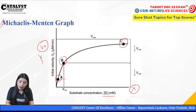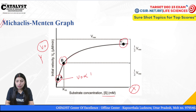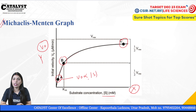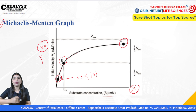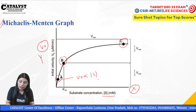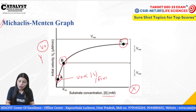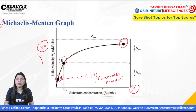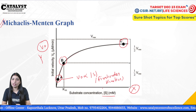Point number one is the initial condition: when the substrate concentration is low, the velocity is directly proportional to the substrate concentration. As substrate increases, velocity increases proportionally. This represents first-order kinetics, where velocity is directly proportional to the substrate concentration.